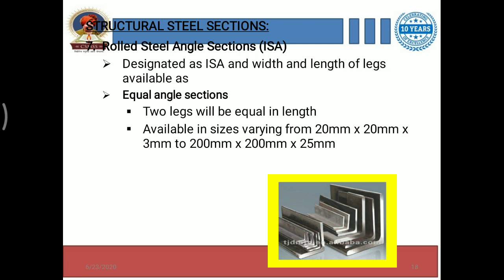What is meant by equal angle sections? In equal angle sections, the two legs will be equal in length. You can see in the diagram there are two different legs, and the length of these two legs will always be equal for equal angle sections.